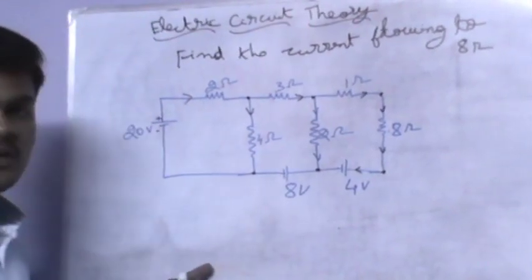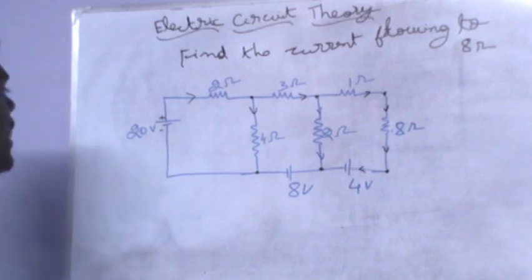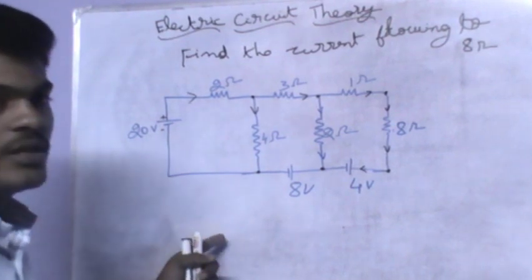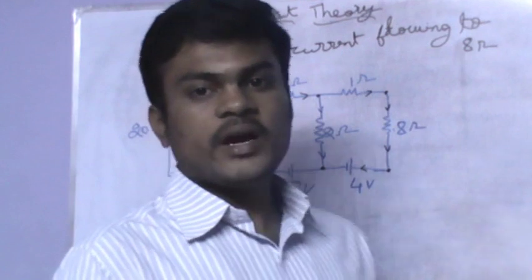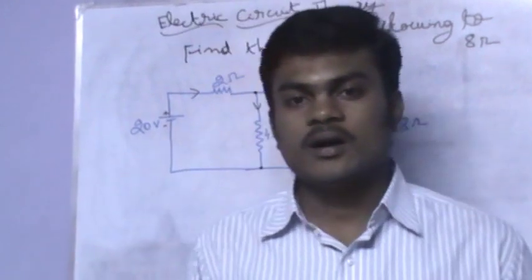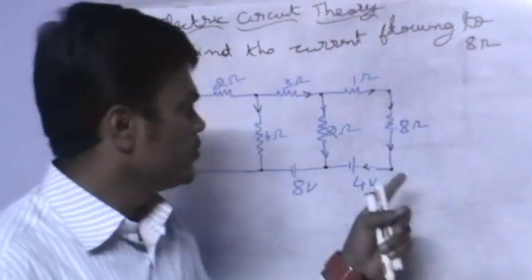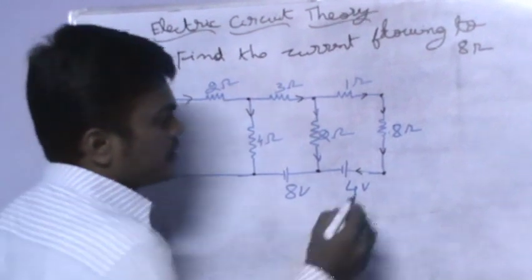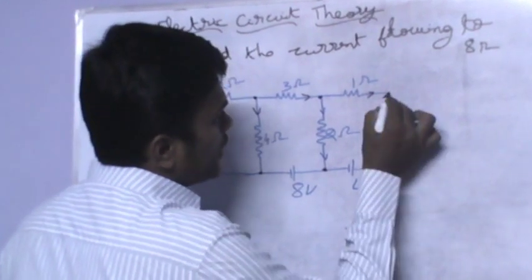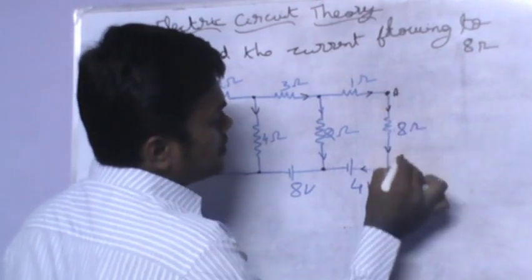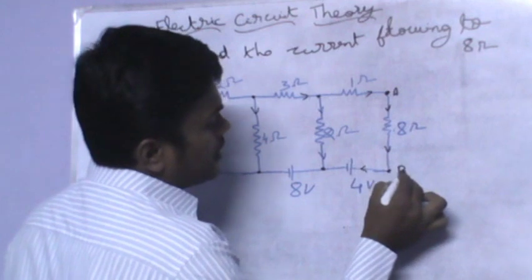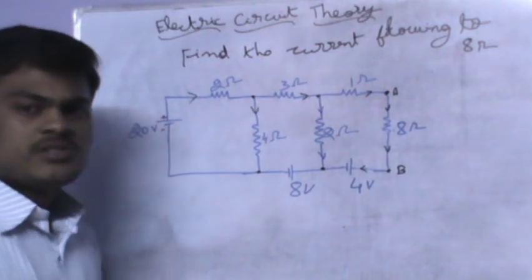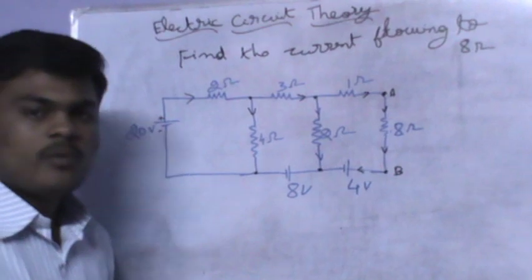Here I have an example circuit with three voltage sources, and the question is to find the current flowing through the 8 ohm resistor. Let me mark what I am going to find — I'll take both ends as A and B, just for my convenience.